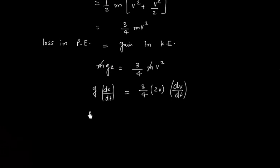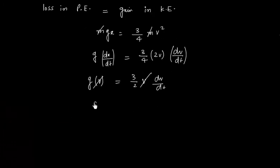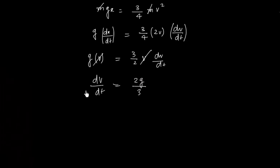dX by dT is V, so we will have 3 by 2 V dV by dT. So V cancels, so we will have dV by dT, and dV by dT is nothing but acceleration of the disk. And this equals 2G by 3.